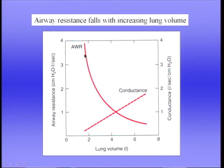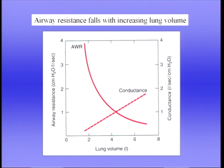Conductance — the inverse of resistance — has an almost linear relationship with lung volume. This relationship is clinically important: we need to know lung volume when measuring airway resistance, and it explains why patients with severe lung disease breathe at high lung volume. A patient with severe chronic obstructive lung disease could not survive breathing at normal volume because resistance would be too great, so they breathe at high lung volume.